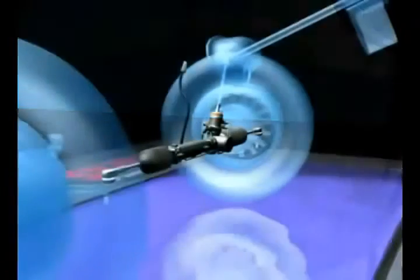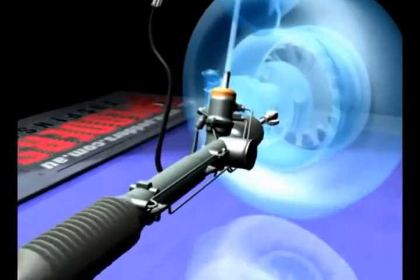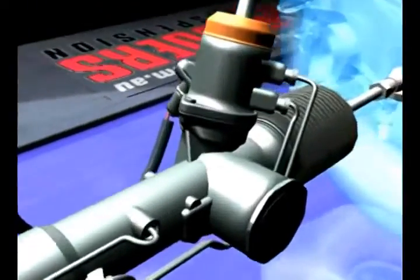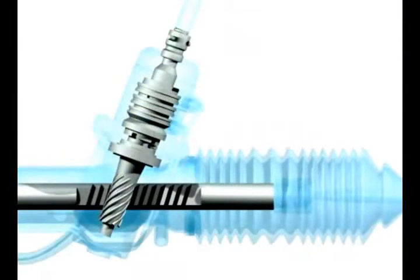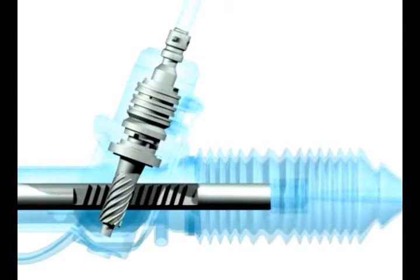The pinion assembly is an integral part of most steering gears. The heart is the torsion bar, a thin steel bar connecting the driver to the wheels.